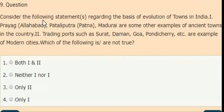Question: consider the following statement regarding the basis of evolution of towns in India. First: Prayag, Patliputra, Madurai are some examples of ancient towns in the country. Second statement: trading ports such as Surat, Daman, Goa, Pondicherry, etc. are examples of modern cities. Which of the following are true? Both 1 and 2, neither 1 nor 2, only 2, only 1. The correct answer is option 2. Neither 1 nor 2 statements are true.